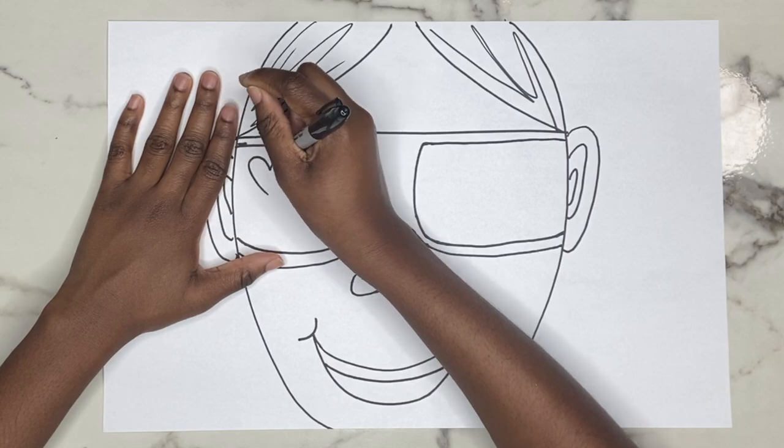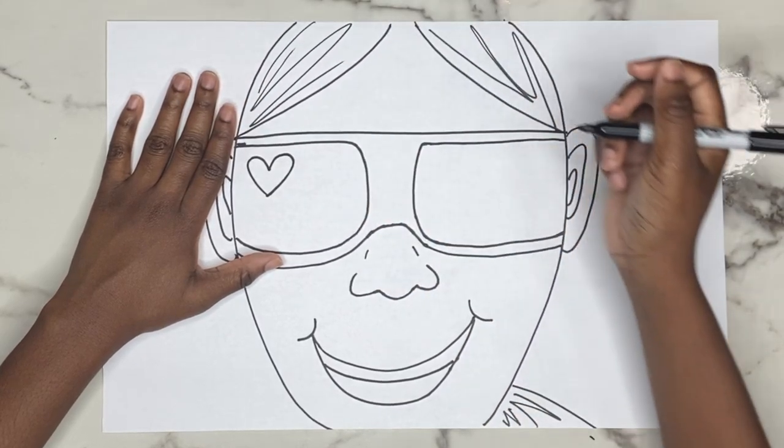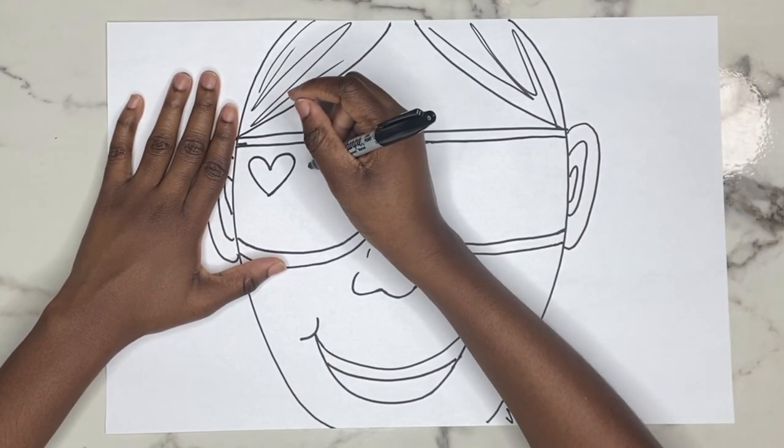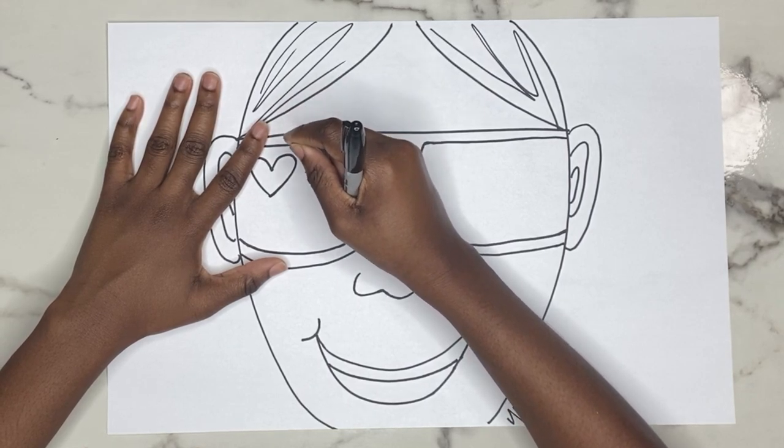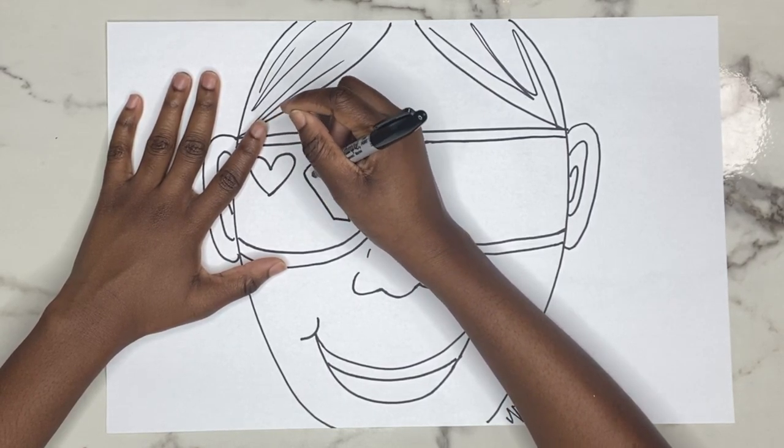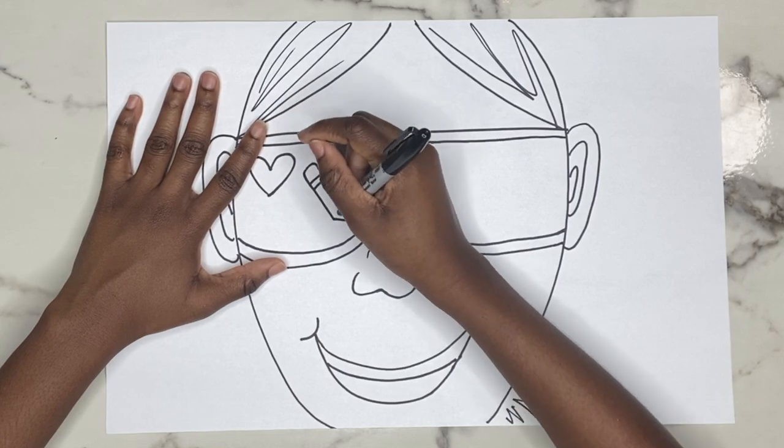What are things you want to see happen in the future? I want to continue to see people show love, so I'm going to draw a heart. I also want to see myself becoming a better artist, so I'm going to draw a pencil to remind myself to keep practicing.